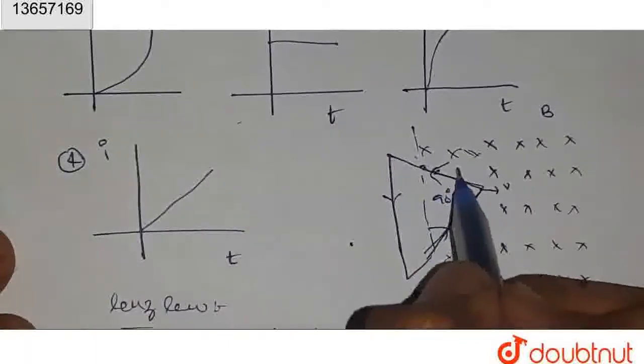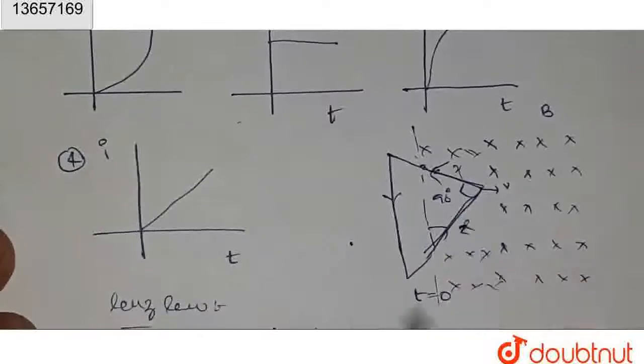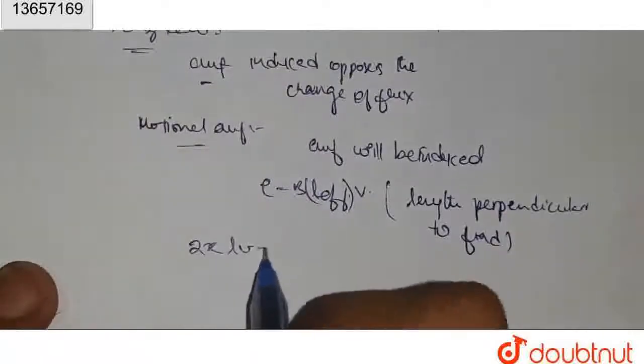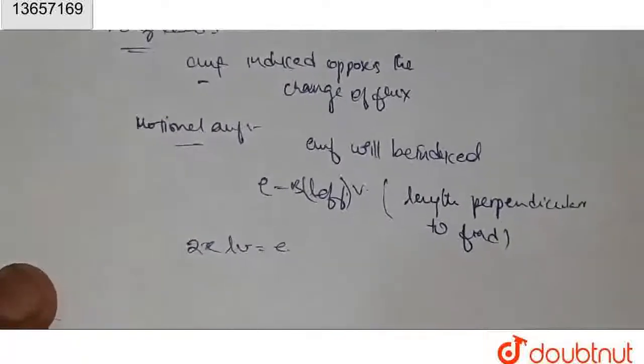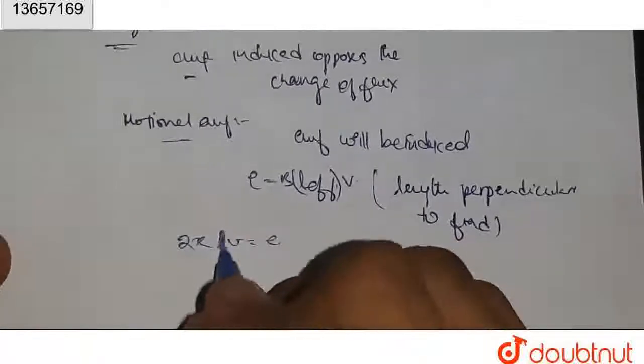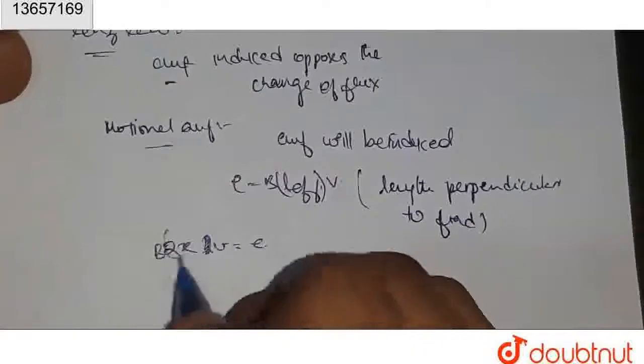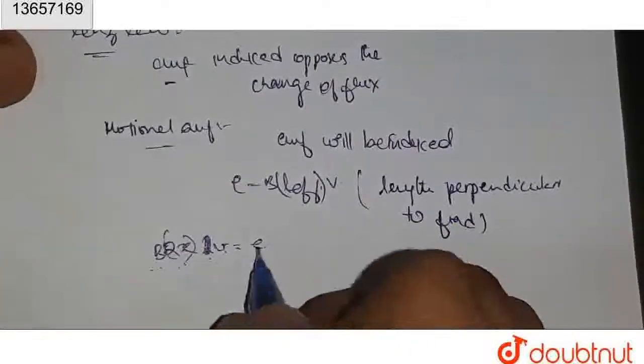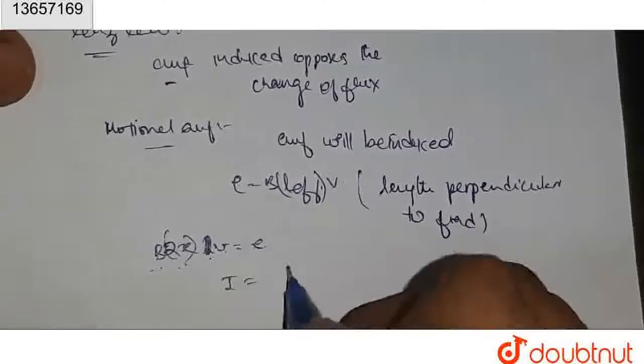Our effective length, this one. Let us say this is X and this is X, so 2X into B into V. This is our EMF. Current will be E by R.